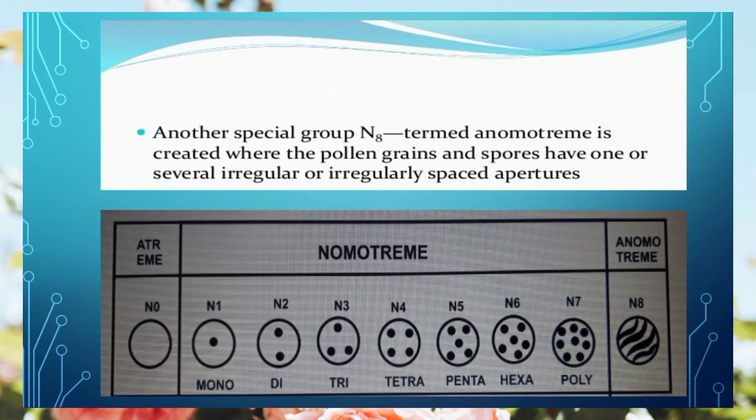The last class is N8, which we call anomtreme. In anomtreme, the apertures on the pollen grain or spore are irregularly spaced apart. Looking at the diagram from N1 to N7: N6 and N7 indicate polytreme, N0 has no aperture, and N8 has apertures that are irregularly spaced apart.